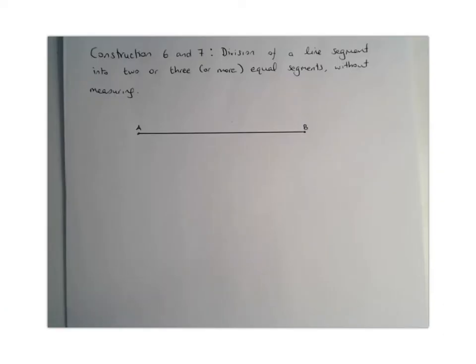For construction 6 and 7, we want to look at how to divide a line segment up into 2 or 3 or more equal segments without measuring it. So basically we want to split up this line segment AB in, let's say, 3 sections. So that's what we're going to do in this construction.